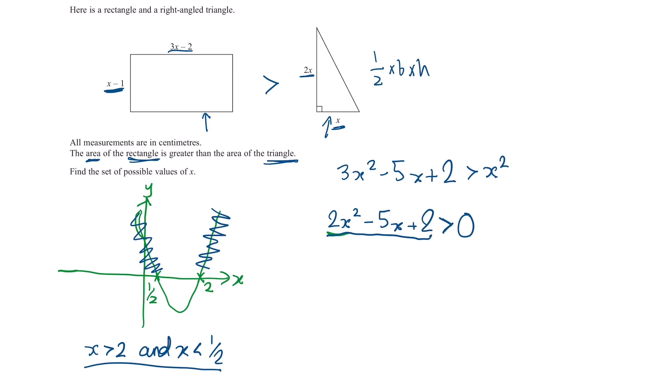Now you may be tempted to just put this as your final answer. However if we look back at the question, notice that one of the lengths of the rectangle is x minus 1. Now if x is less than a half then x minus 1 will be less than 0 so we'll be having a negative length essentially. Now that is definitely not possible, you cannot have a negative length.